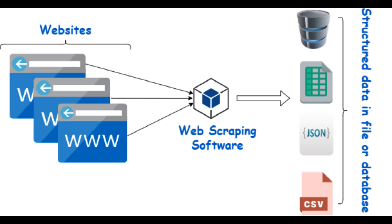We can extract information from the HTML text using string methods. We use dot find to search through the HTML text for the title tags and extract the title of the web page. We can use a string slice to extract the title if we know the index of the first character of the title and the first character of the closing slash title tag. dot find returns the index of the first occurrence of a substring, so we can get the index of the opening title tag by passing the string 'title' to dot find.